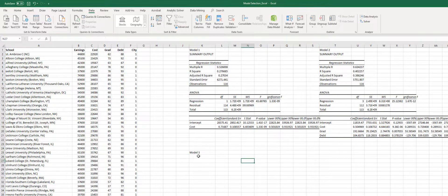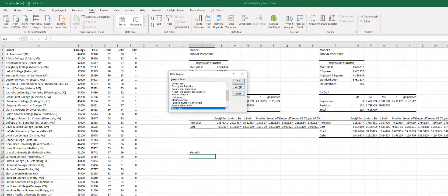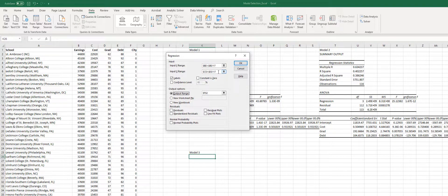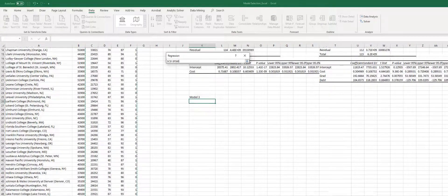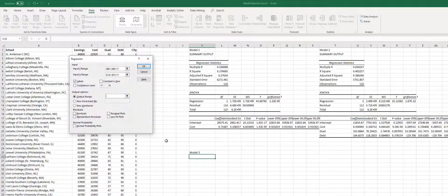And finally, we will estimate our third model. Data, data analysis, regression. Y variable is the same, earnings. And now for the input X range, we have four predictors. So we are going to select four predictors. And our output range is here, and click OK.